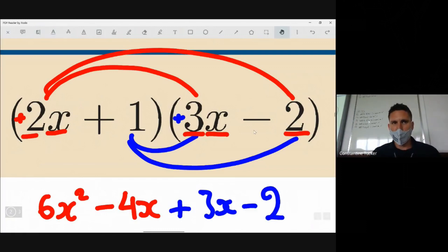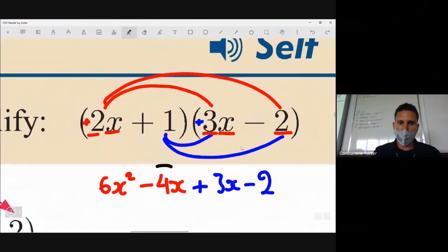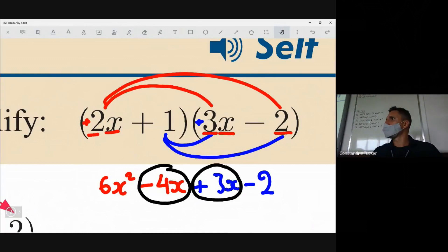Excellent. Final stage now - let's collect the like terms, which would be this collected with this. Minus x, minus 1x, all of that is correct. When you've got 3 and you take away 4, or minus 4 and add 3, you get minus 1 in the end. So final answer here: 6x² minus x, or 1x - that's fine if you put the 1 there. And finally, minus 2. Let's not forget the smiley face.